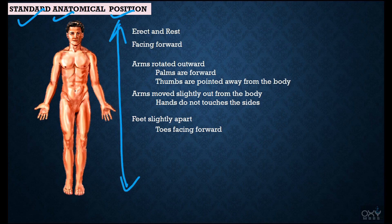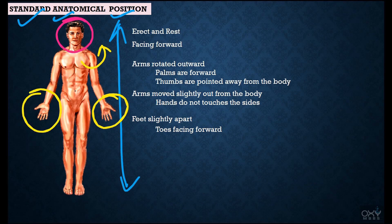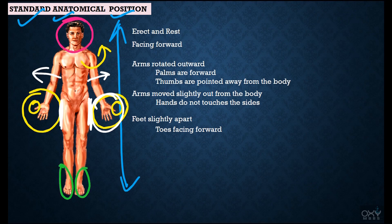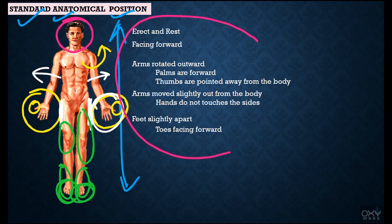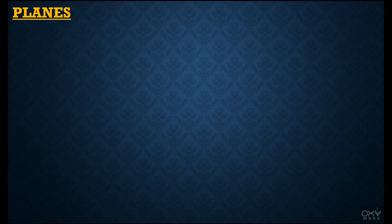Our body is in standard anatomical position when: it is erect and in the rest state, facing forward; arms are rotated outward so that the palms are facing forward and thumbs are pointed away from the body; the arms are moved slightly away from the body so the hands do not touch the body; feet are slightly apart from each other and parallel to each other; and the toes are facing forward. These are the characteristic features of the standard anatomical position.